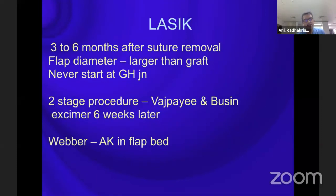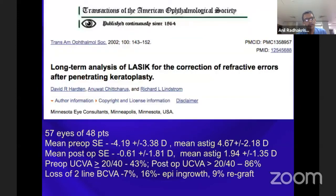LASIK is a popular refractive surgical procedure that can be considered in patients with post-PK astigmatism, but only after three to six months of suture removal. Because you cut horizontally across the graft-host junction, there will be some change in corneal biomechanics, so people advocate doing the flap cut first and then performing the ablation six weeks later. The outcomes are better for low to medium myopes but less promising for high myopes, and the astigmatism results are less encouraging compared to spherical correction.